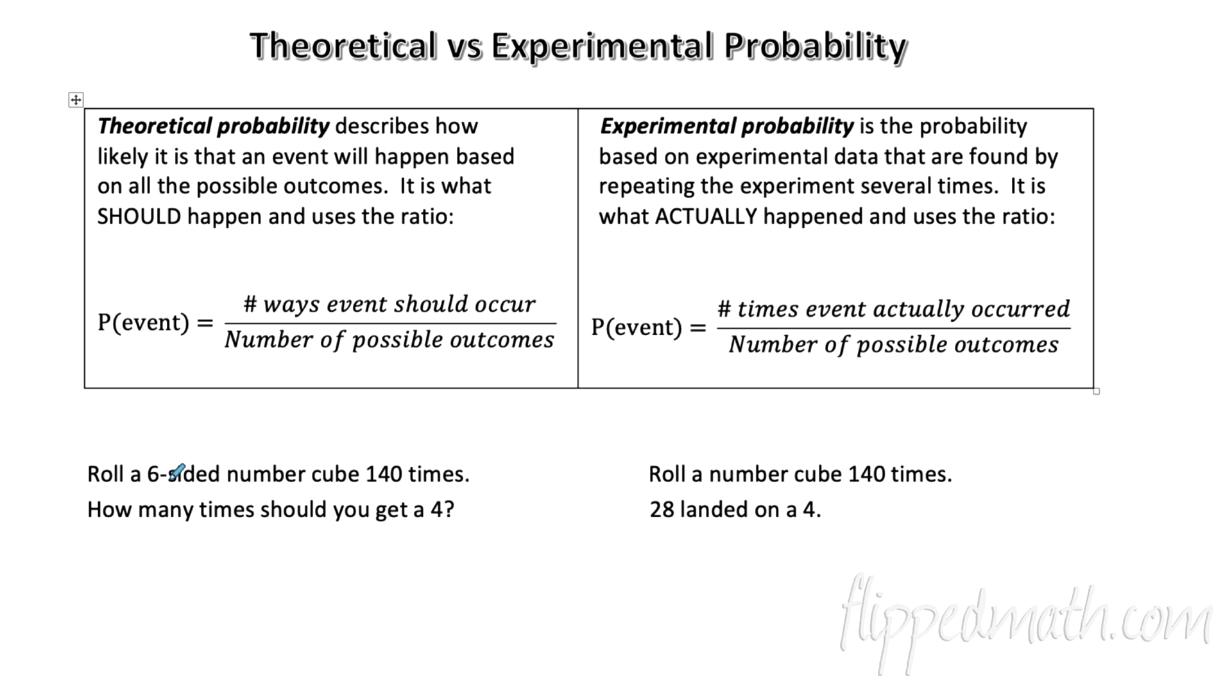So this in theory, let's look at this problem down here, which aligns to this theoretical probability. If we roll a six-sided number cube, that's die again, 140 times, how many times should we get a four? So I want to know in this case, what is the probability of getting a four? That's how I could write that, P of four. Well, let's see. The probability of getting a four, theoretically, there are six outcomes. So we put the total number of outcomes down there. One of them is a success. So it'd be one out of six.